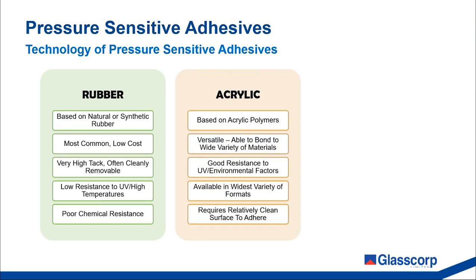Adhesives formulated with acrylic polymers are the other common adhesive chemistry used in pressure sensitive tapes. These are versatile, able to bond to a wide variety of different materials, and are available in the widest variety of formats.